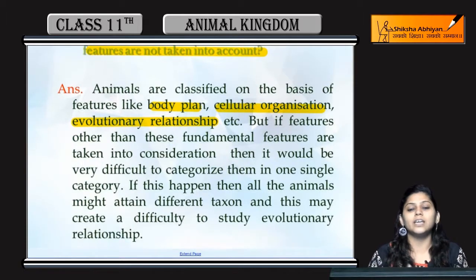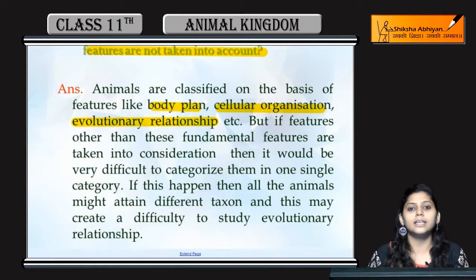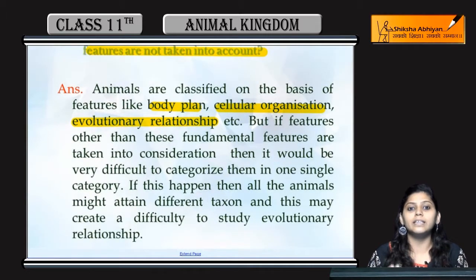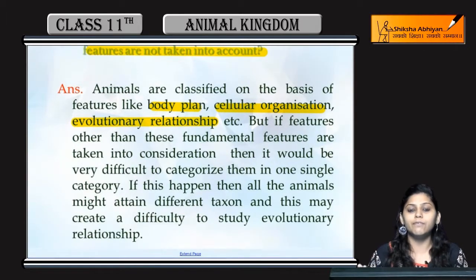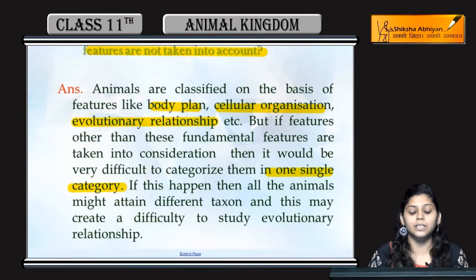अगर हम body plan, cellular organization, या evolutionary relationship को छोड़ कर कोई और characteristic लें — जैसे कि उसका eye color कैसा है। अगर human beings की बात करें तो सभी का eye color different होता है। और nails के size के basis पे अगर classify करें, तो सबके nails का size भी अलग होता है। ऐसे features लेना शुरू कर दें तो बहुत difficult हो जाएगा animals को classify करना, और सबके लिए अलग category बनानी पड़ेगी।